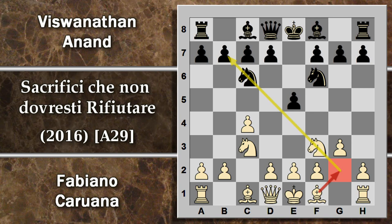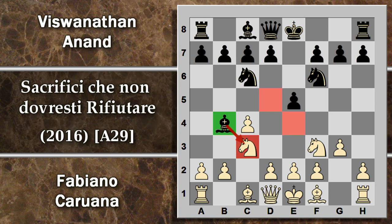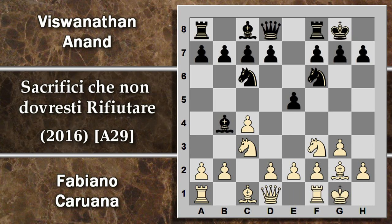Buon posizionamento che controlla le case chiare al centro, inoltre minaccia pericolosamente la casa B7. Questo potrebbe creare dei fastidi di sviluppo per l'alfiere campo chiaro del nero. Si prosegue quindi con alfiere B4, non si esclude anche la possibilità di sacrificare questo alfiere sul cavallo per aumentare il proprio controllo delle case chiare al centro. L'alfiere viene fianchettato, entrambi quindi arroccano, e ora per l'appunto E4.